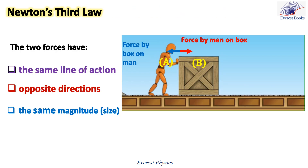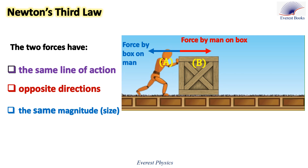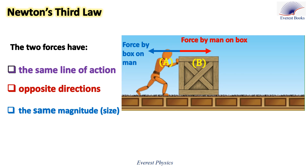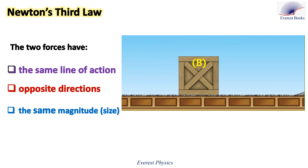According to Newton's third law, when object A exerts a force on object B, then B simultaneously exerts an equal but opposite force on object A. The two forces have the same line of action, opposite directions, and the same magnitude.